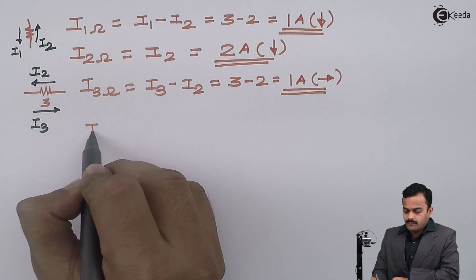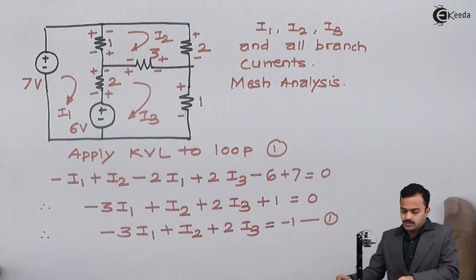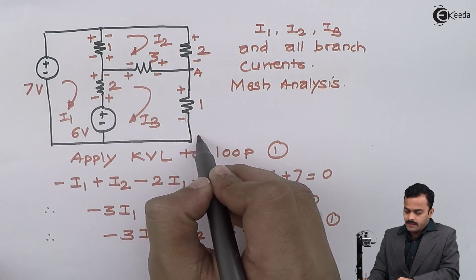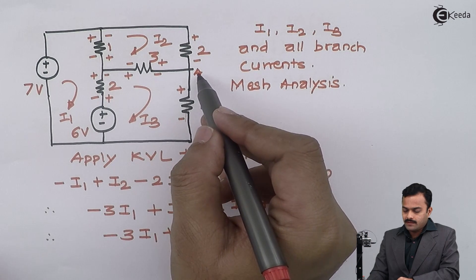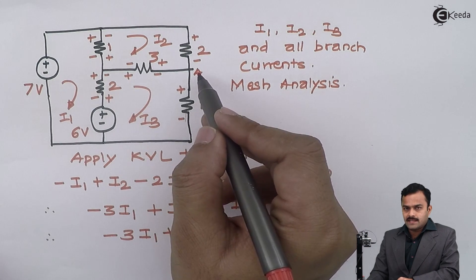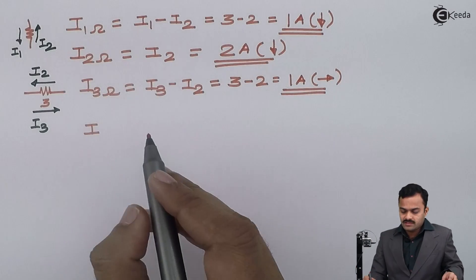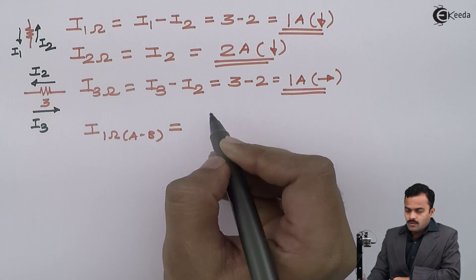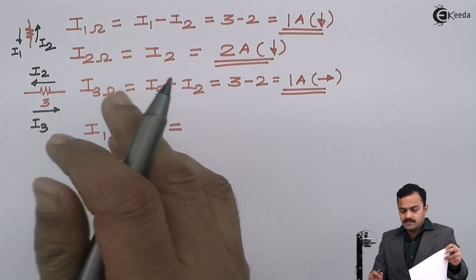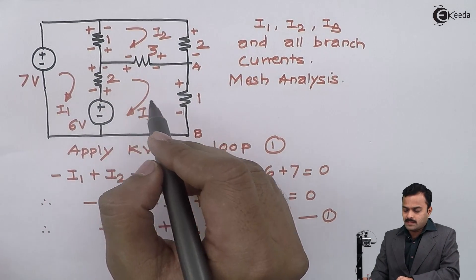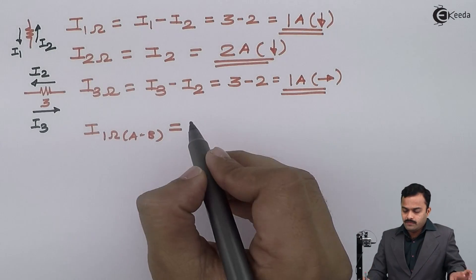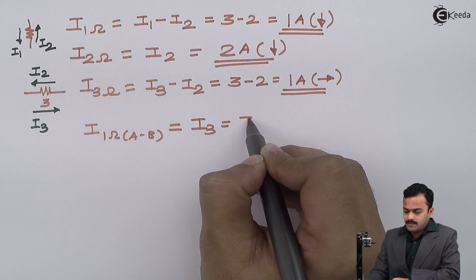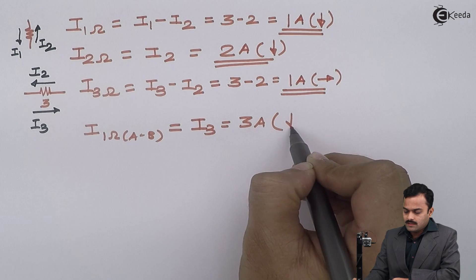For the second 1Ω resistance — to avoid confusion I label its terminals as nodes A and B. Only i3 flows through this 1Ω resistance connected between points A and B, so this loop current is the branch current directly. The answer is simply i3 = 3 amperes, flowing in the downward direction.